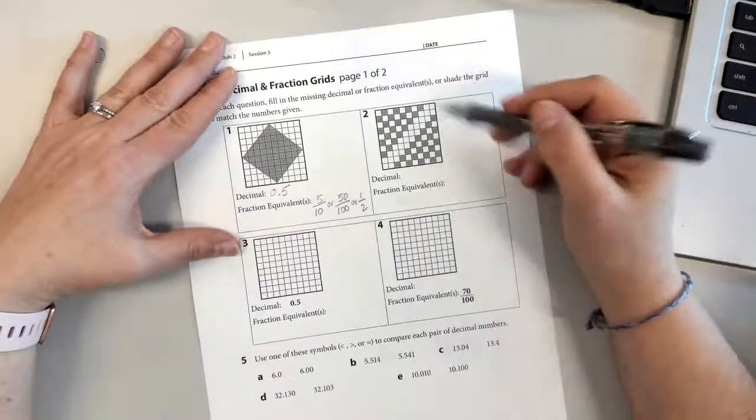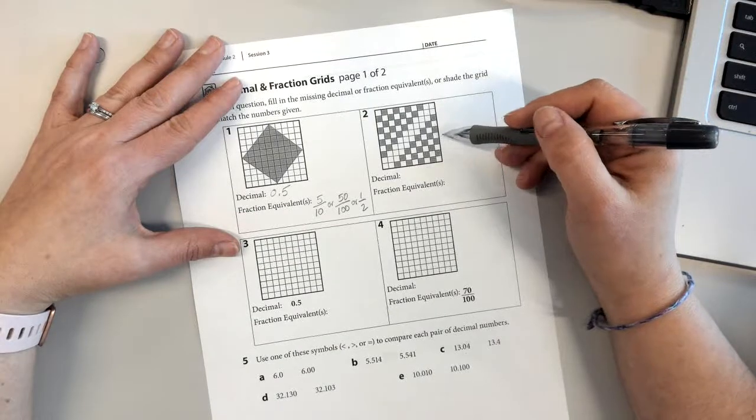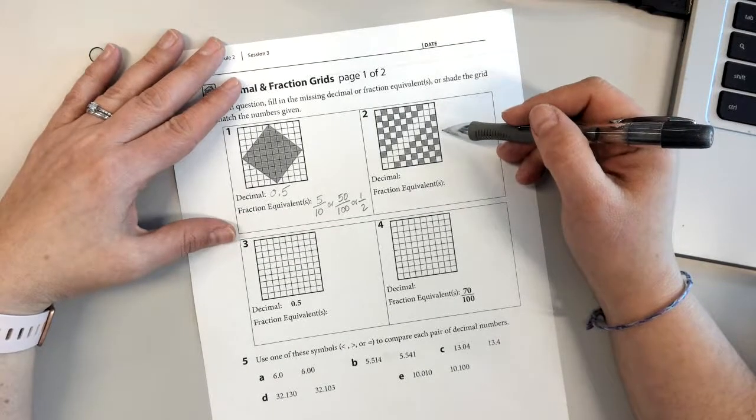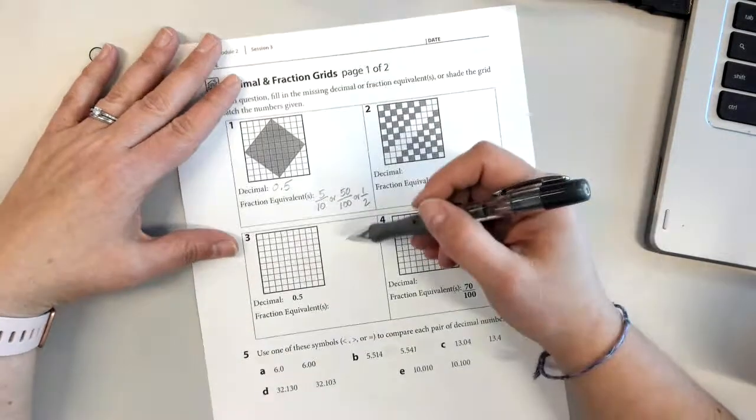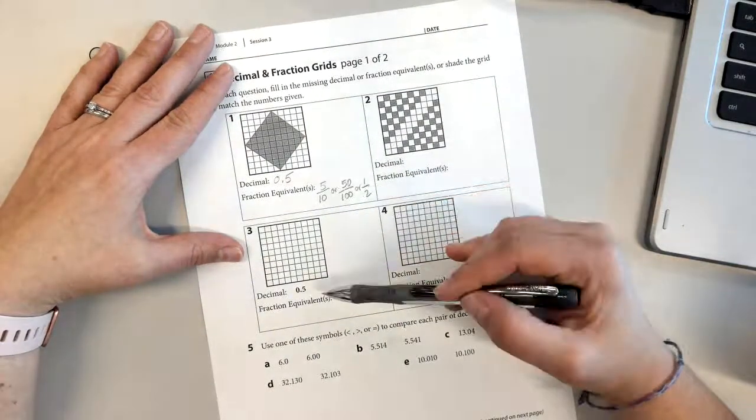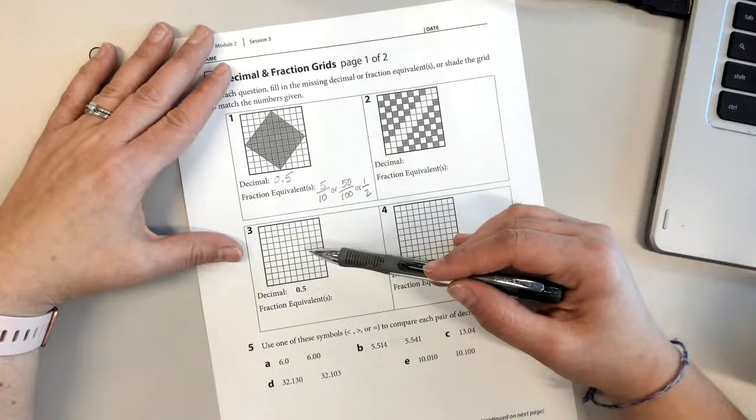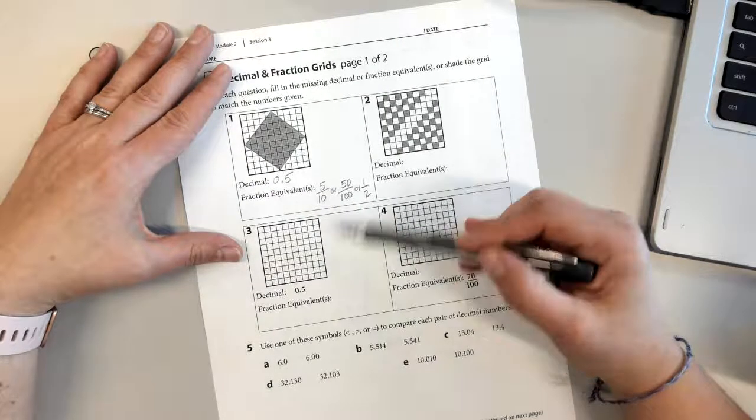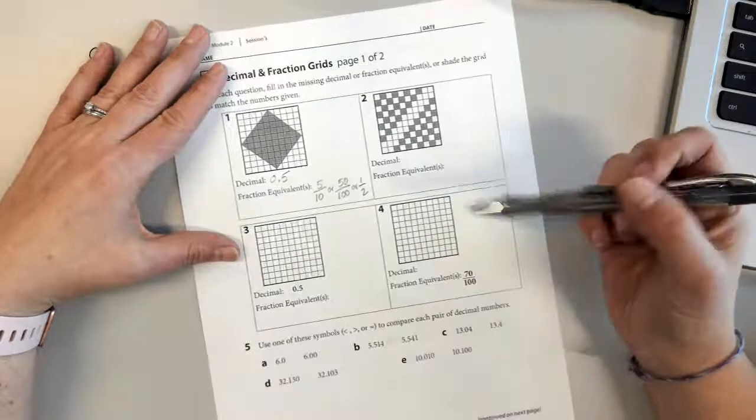So on number two, you're probably going to have to count how many hundredths are colored in and figure that one out. Let's go down to number three. Here you have the same decimal as number one, so figure out a different way to shade that in. And then your fraction equivalents are going to be the same, so that makes that one easy.